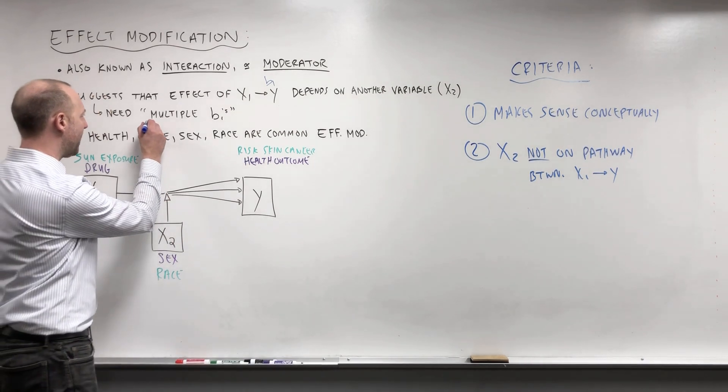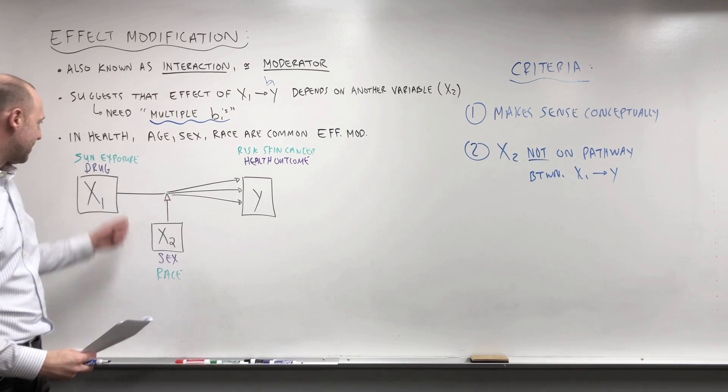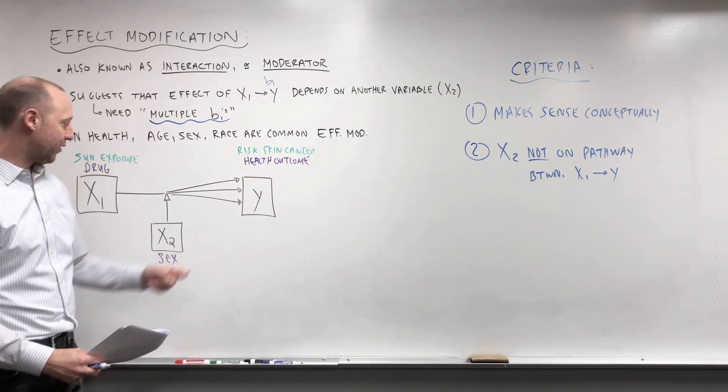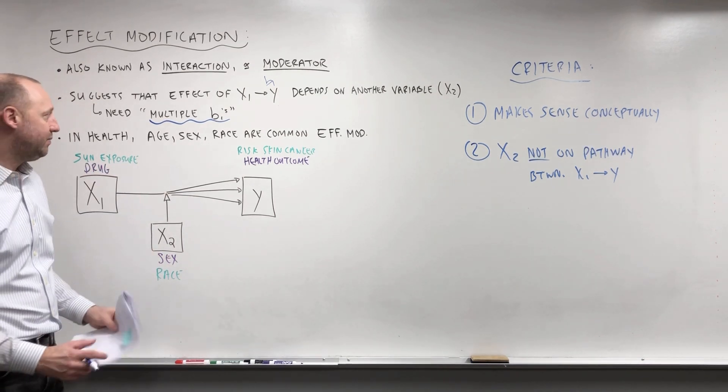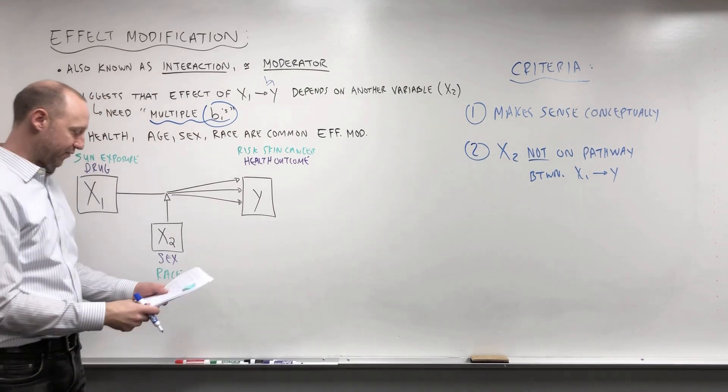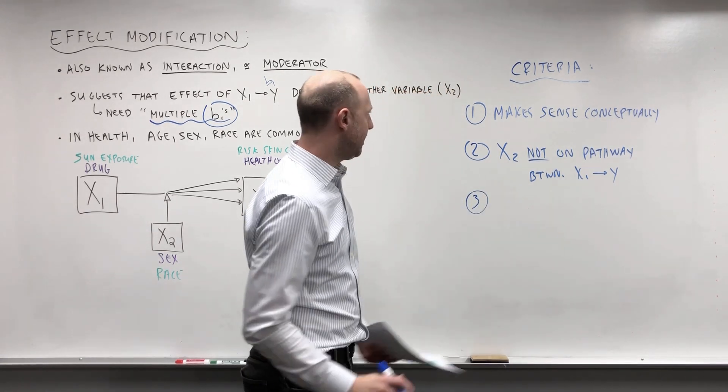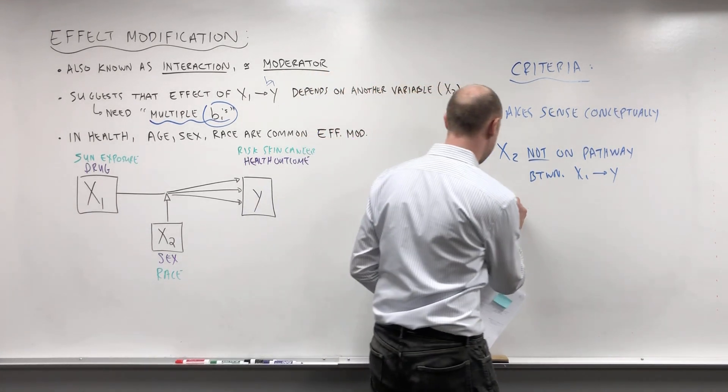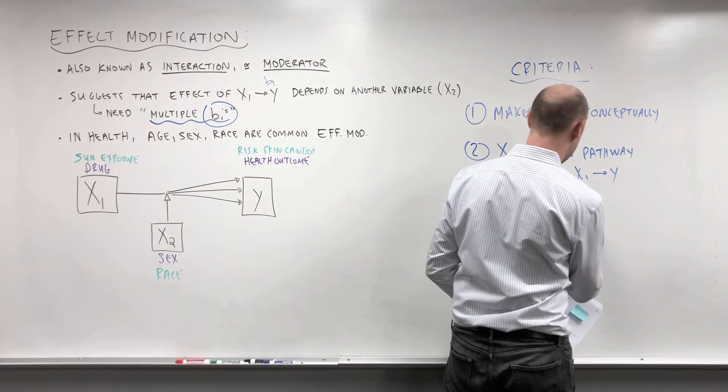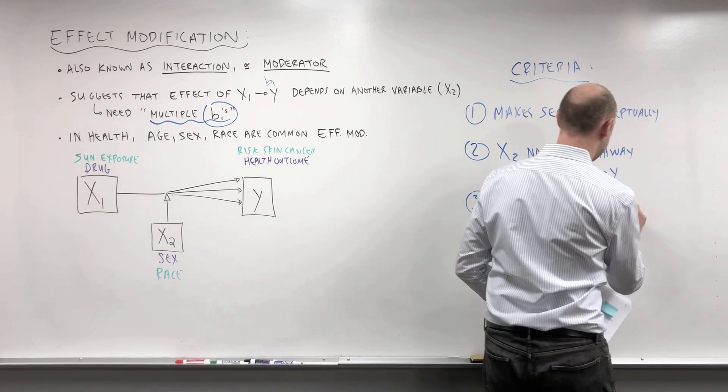I just want to kind of go back to here. One way we can think of it is that we need multiple coefficients. Here we need to say, what's the effect of the drug on the health outcome for males and what's the effect of the drug for females? So we're going to need a b1 coefficient for an effect for males and an effect for females.